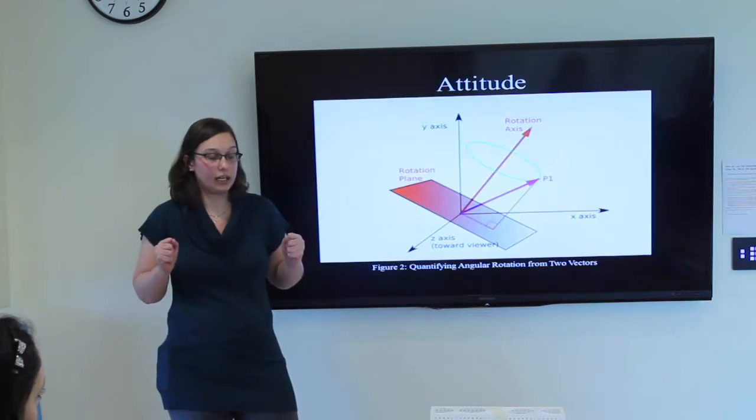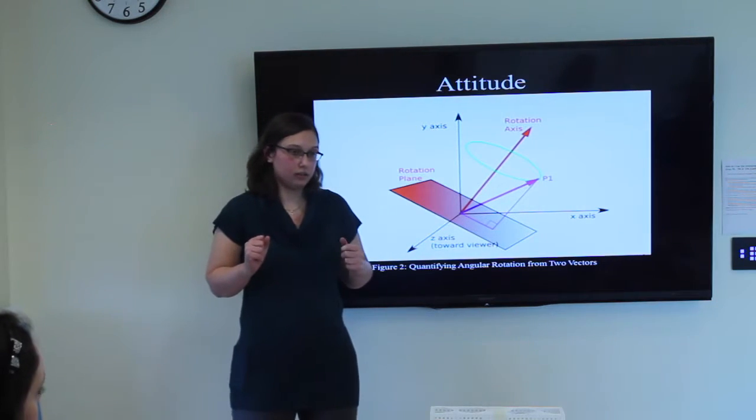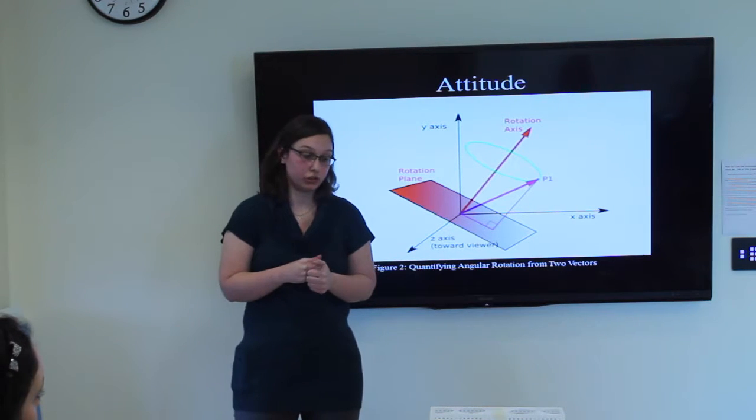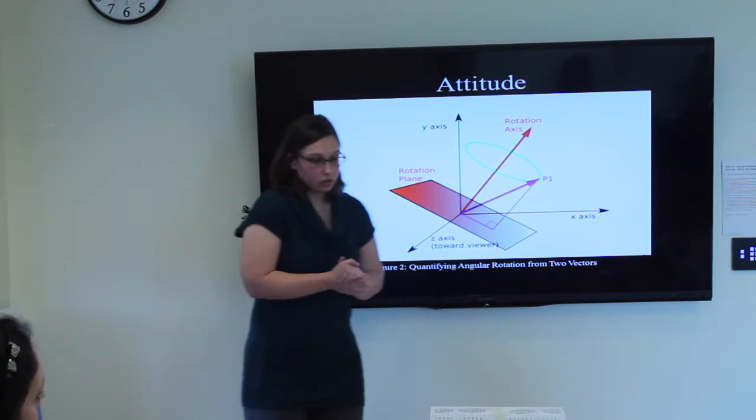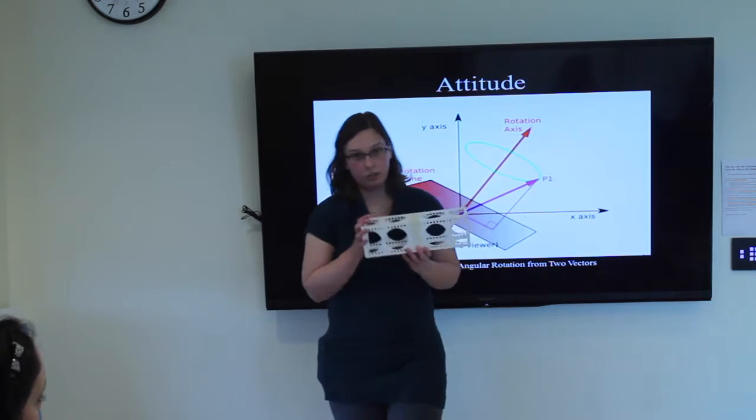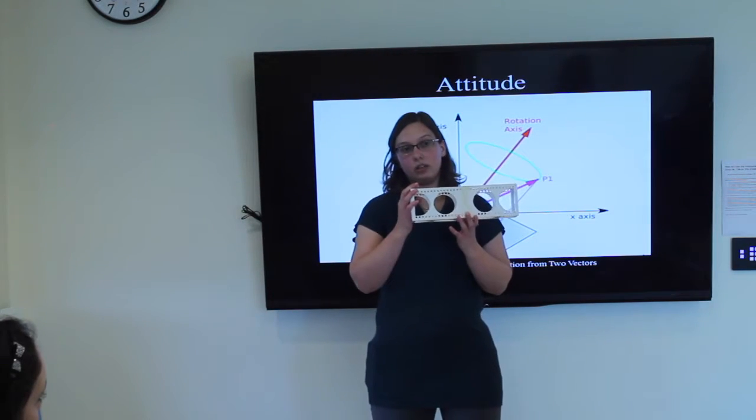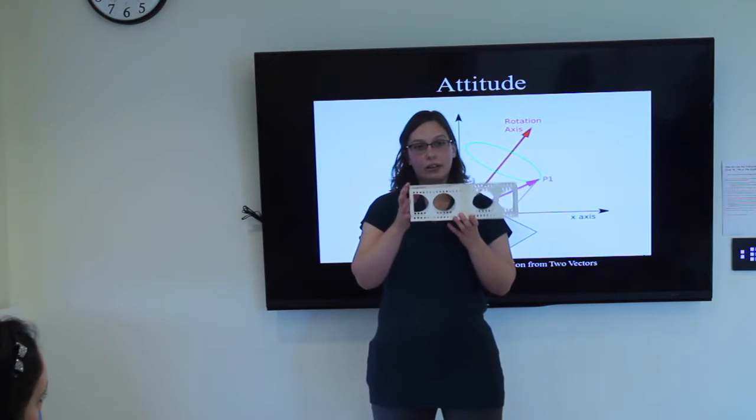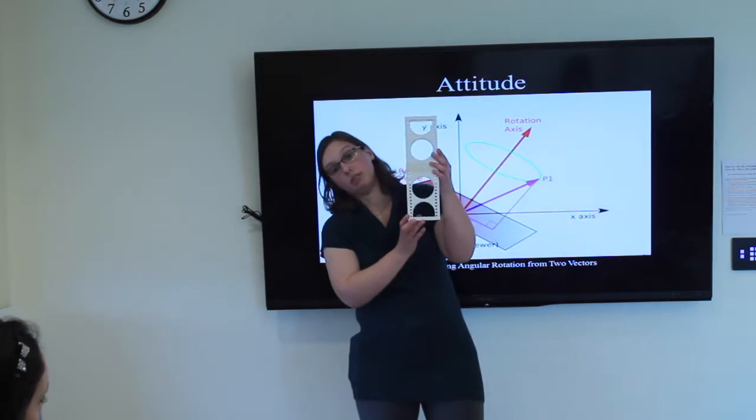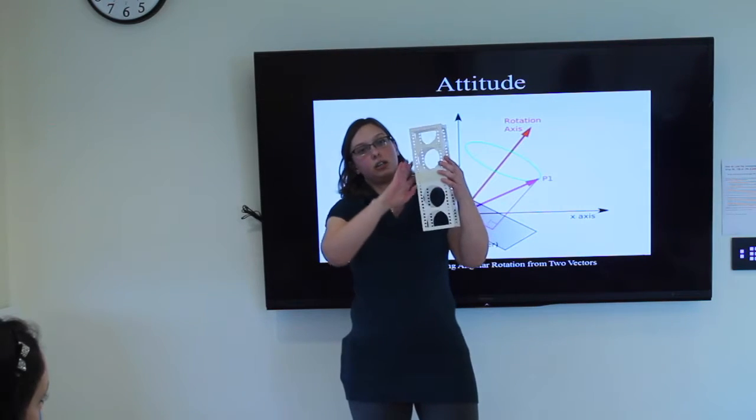Next step is to explain attitude. Attitude is the spacecraft's orientation along its orbital track. So the satellite could be any which way direction, as long as it's on the right path. It could be horizontal the way we want it, or it could be vertical.